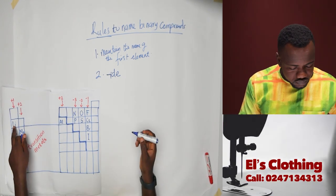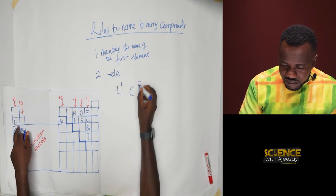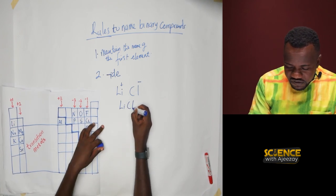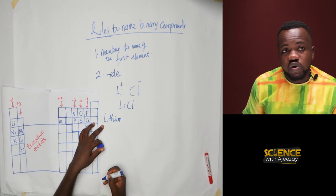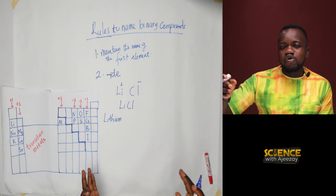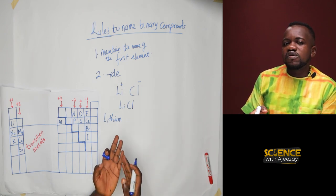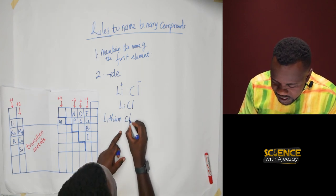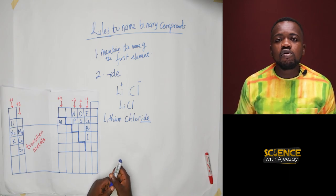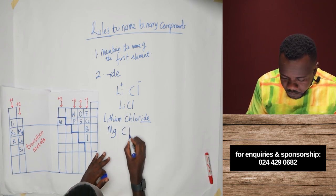For a quick example, let's take lithium (Li) and chlorine (Cl). They combine to form LiCl. The name: you maintain the first element as lithium. For chlorine, you drop the last three letters — the '-ine' — and replace it with '-ide', so chlorine becomes chloride. The compound is lithium chloride.